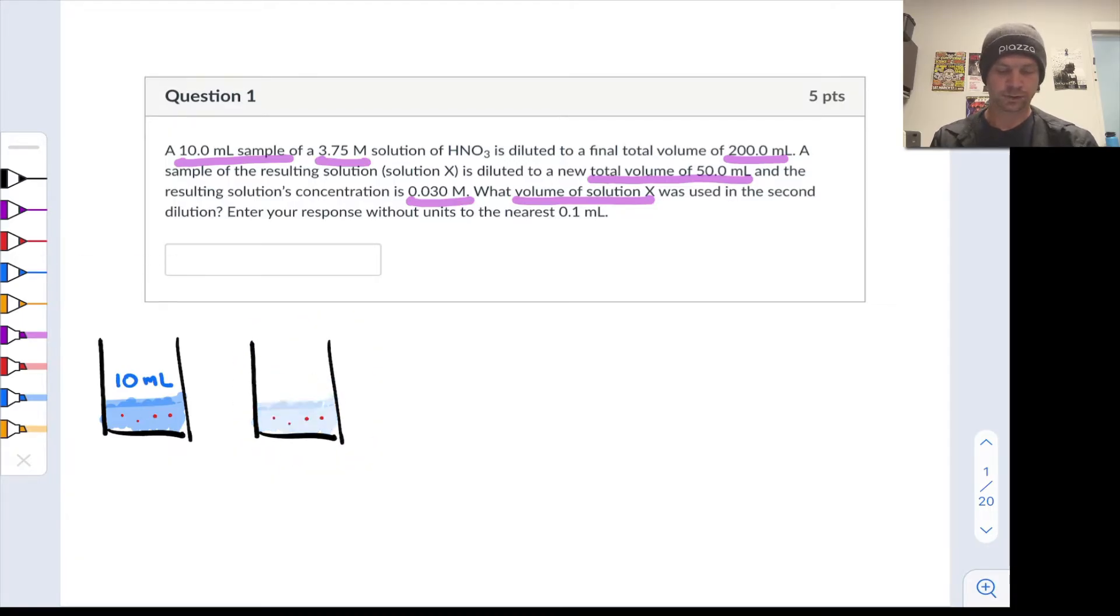So essentially what we do here is we add solvent, right, because that's what dilution is. We add solvent until the volume here is now 200 milliliters total and we haven't changed the number of moles of nitric acid. That's key to dilution. That's why I left the four dots at the bottom here. Of course they would intersperse themselves throughout the solution but the amount of solute has not changed.